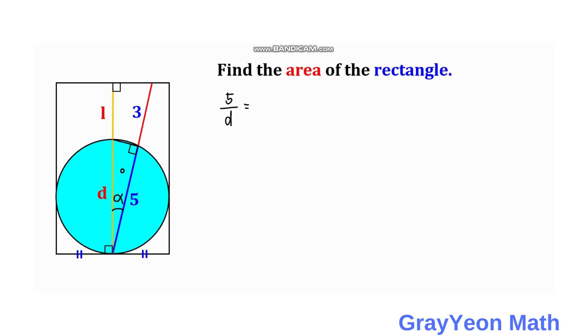So for that bigger triangle, the adjacent side is actually L plus D all over the hypotenuse which is 3 plus 5 or 8. So we have L plus D times D is equal to 8 times 5 which is 40.